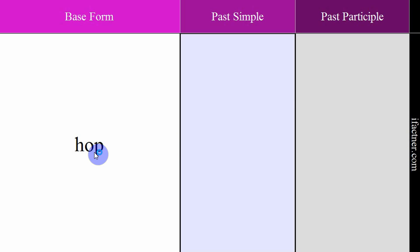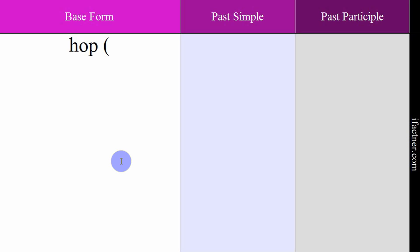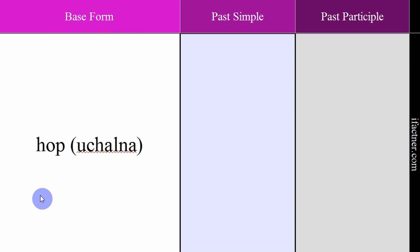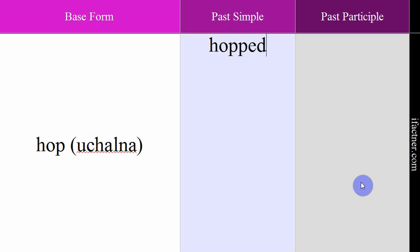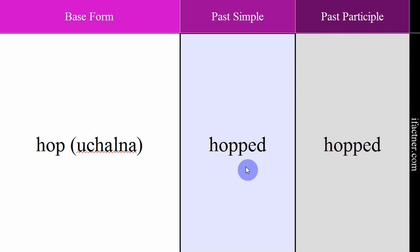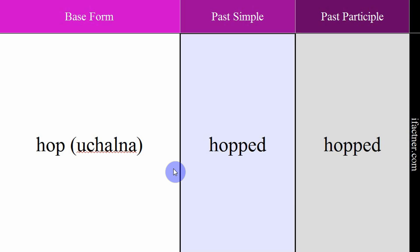The next verb is 'hop', meaning uchhalna — to hop or jump, like a frog. Example: 'The frog hops.' — Daadu uchhalta hai. The P is doubled in past forms. Past simple and past participle: hopped. Note the soft D sound at the end — hopped. Past simple: 'I hopped ten times.' — Mein das dafa uchhla. Past participle: 'The baby has hopped.' — Bachcha uchal chuka hai. Verb: hop. Meaning: uchhalna. Past simple: hopped. Past participle: hopped.